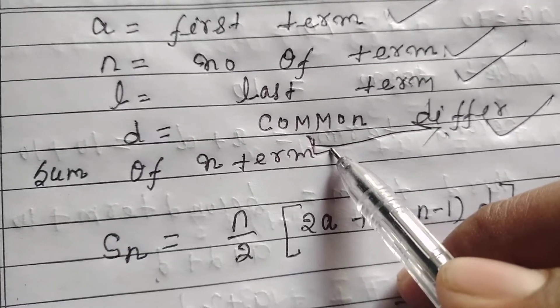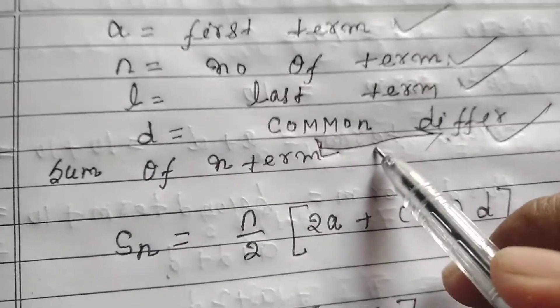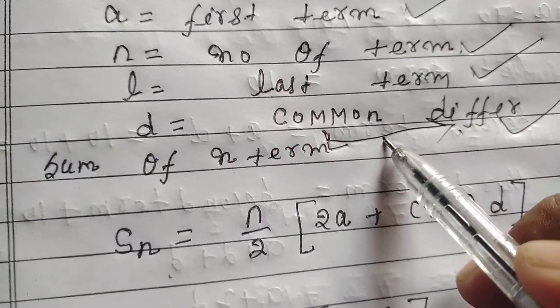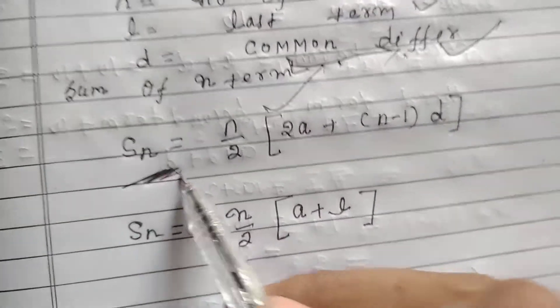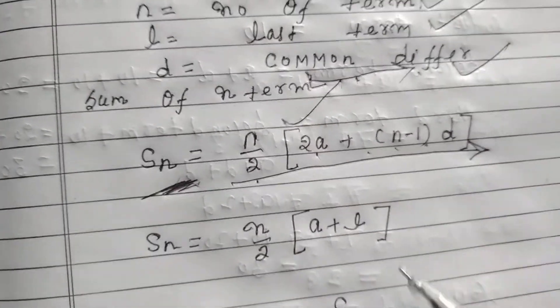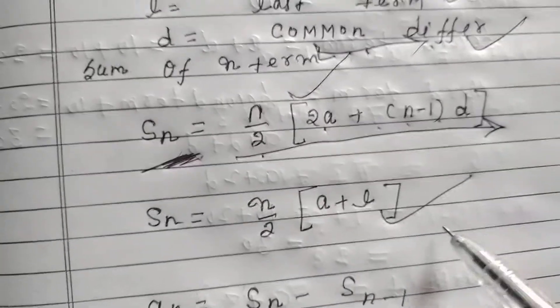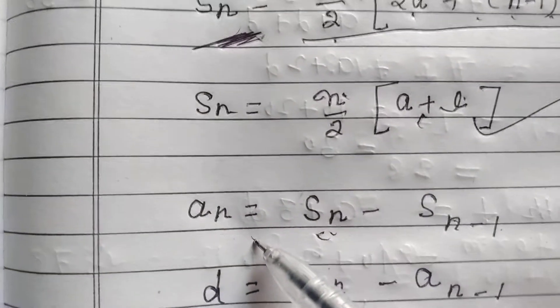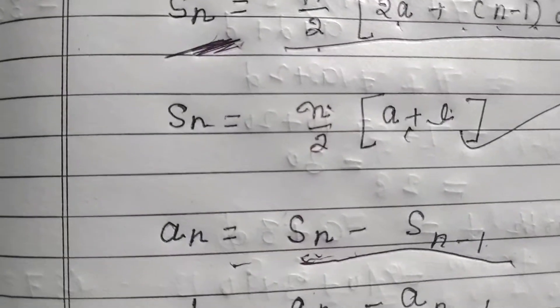Now, what is the sum of n terms? The sum of n terms is Sn equals (n by 2) times (2a plus (n minus 1)d), where a is the first term and n is the number of terms.